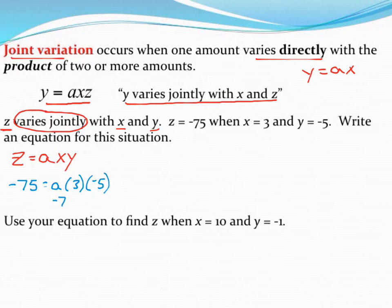So let's make that look a little bit prettier. So I get negative 75 equals negative 15 times a. If I divide both sides by negative 15, I come up with a constant of variation of 5.